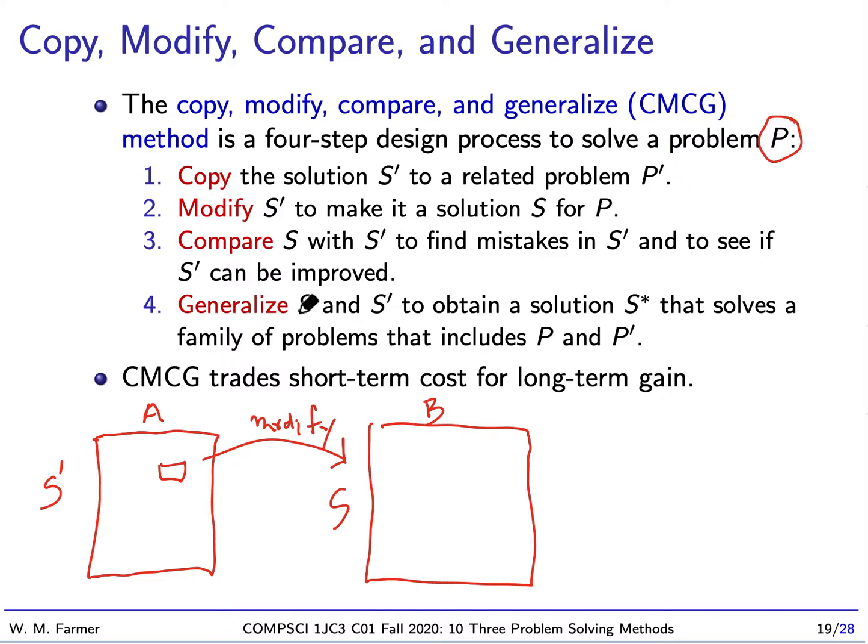And then what I do is I generalize. I come up with a new solution. And that basically has the best, it becomes like a template for both A and B. So this would be a template for some future company I want to apply to. So again, I start with a solution I already have. I modify it to get a new solution. I compare the two solutions. I improve my own solution. Then I generalize it and get a more general, a better solution that I can use over and over again.